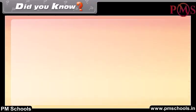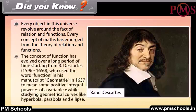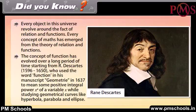Did you know? Every object in this universe revolves around the fact of relations and functions. Every concept of math has emerged from the theory of relations and functions. The concept of function has evolved over a long period of time, starting from R. Descartes (1596–1650), who used the word 'function' in his manuscript Geometry in 1637 to mean some positive integral power x^n of a variable x, while studying geometrical curves like hyperbola, parabola, and ellipse.